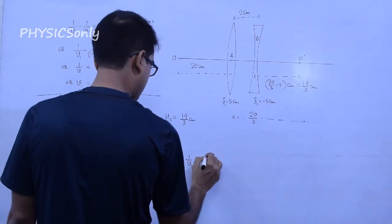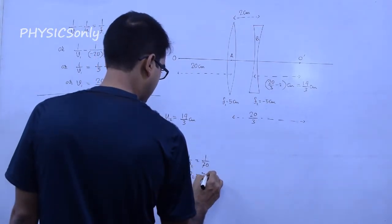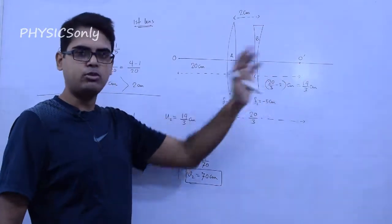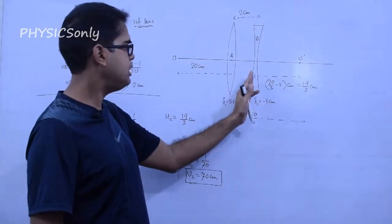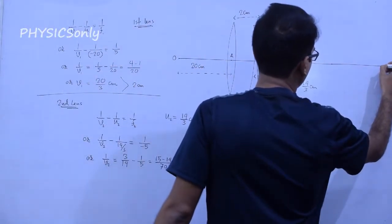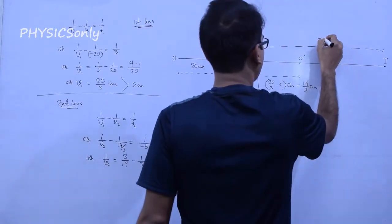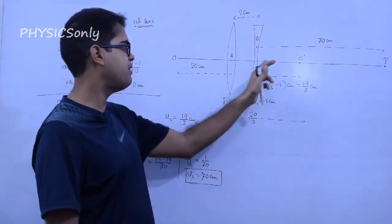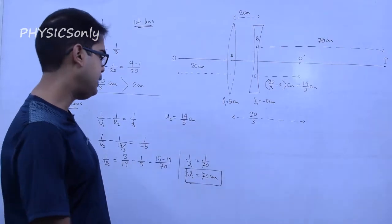Solving the calculation, 1/V2 equals 1/70. Therefore, V2 equals 70 cm. This is a positive value, meaning the final image is at 70 cm from the second concave lens.